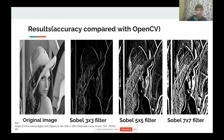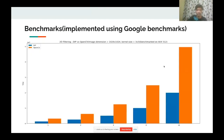We compared our results with OpenCV. This was the original image of Lena, and these three are the results obtained after applying Sobel 3×3, 5×5, and 7×7 filters — all in agreement with OpenCV's output. The benchmarks were implemented using Google Benchmarks on a 1024×1024 image on an AX52 platform, measuring time versus iteration count. For a kernel size of 3×3, the DIP implementation performs better than OpenCV — more than twice as fast.